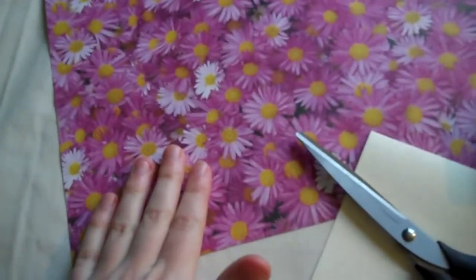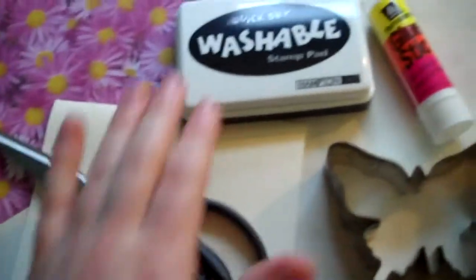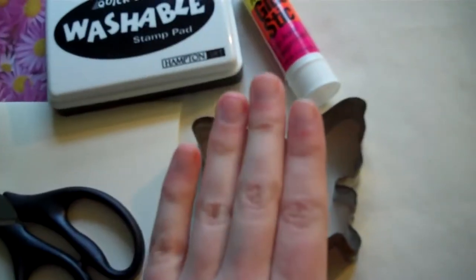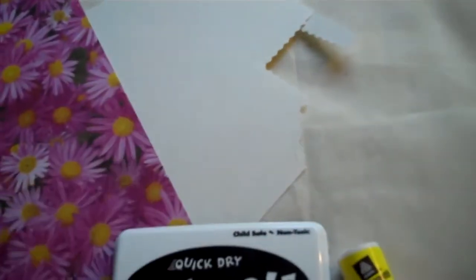So for this card you'll need a piece of printed scrapbooking paper, a blank card, a pair of straight-edge shears, an ink pad, a cookie cutter (I'm using a butterfly in this case), a glue stick, and a piece of white cardstock.